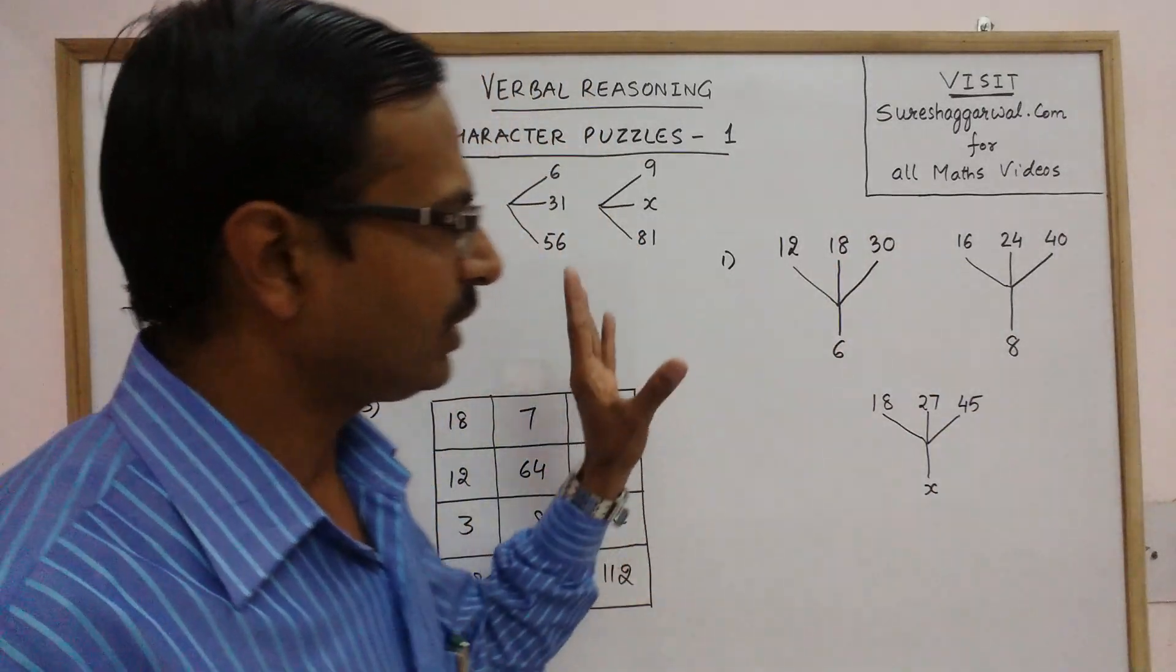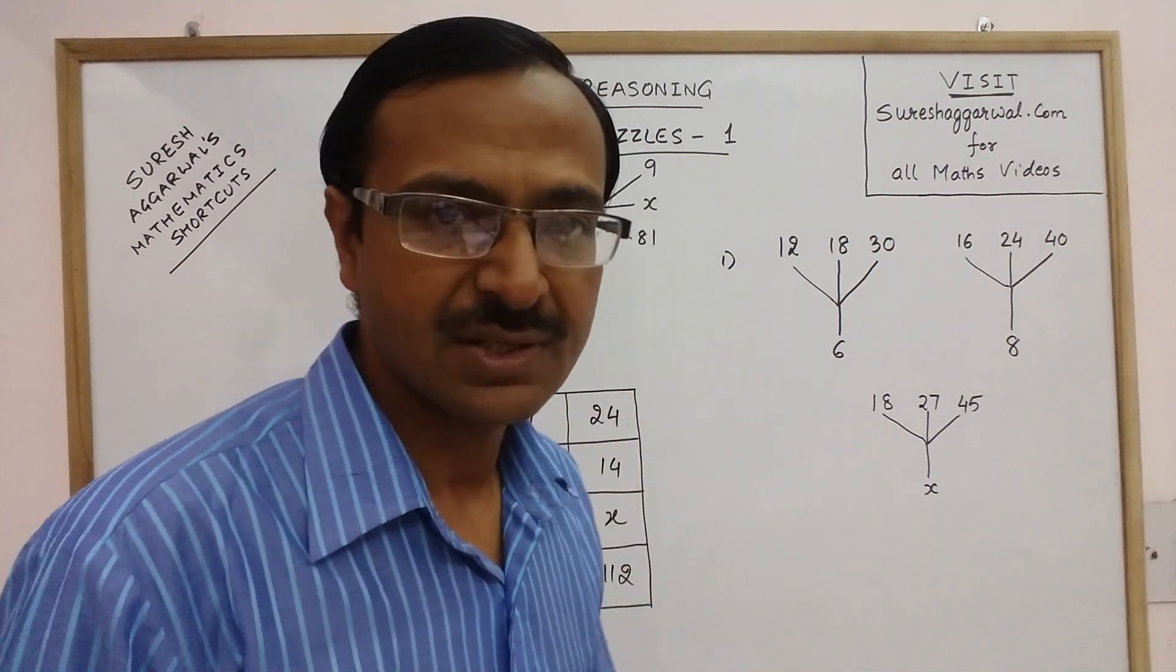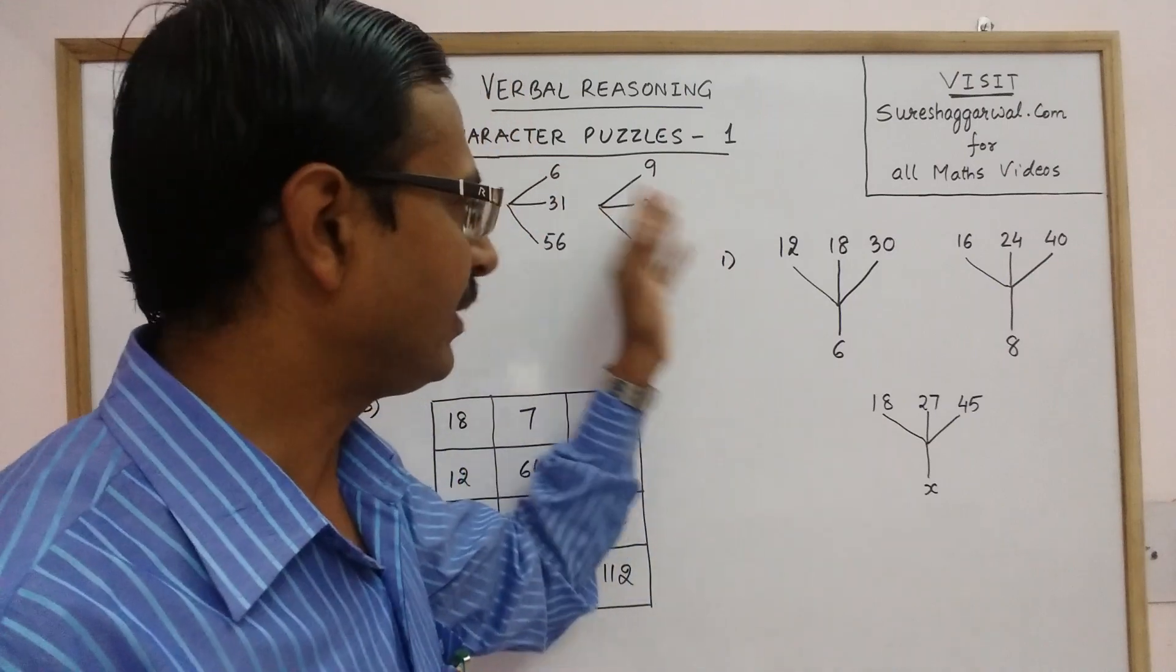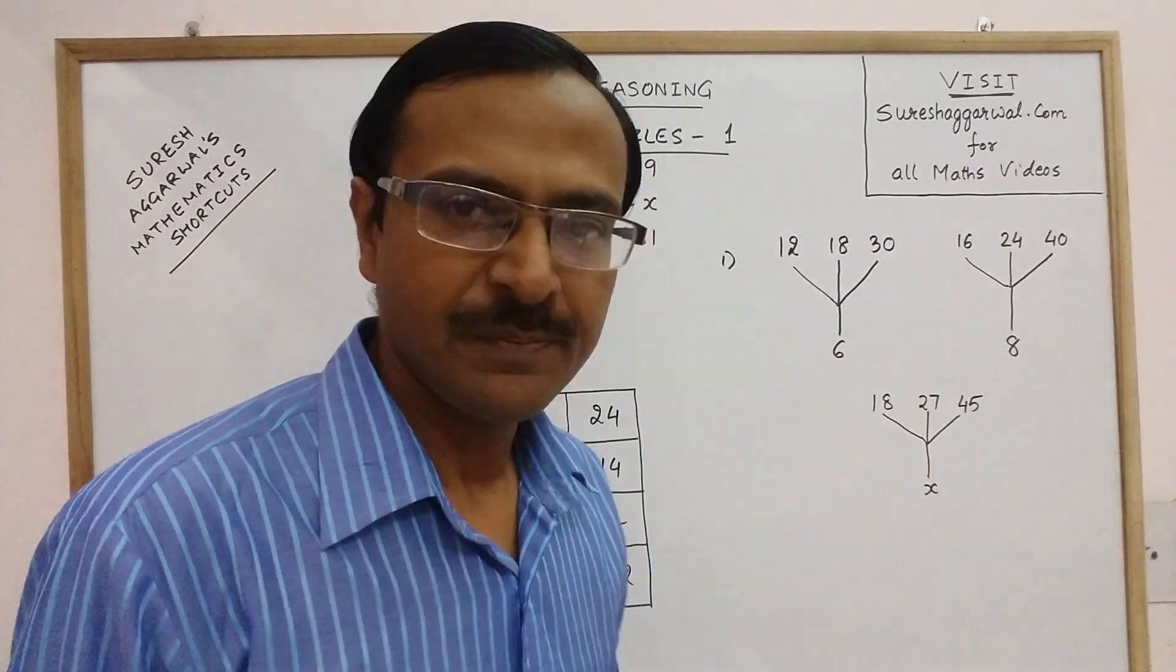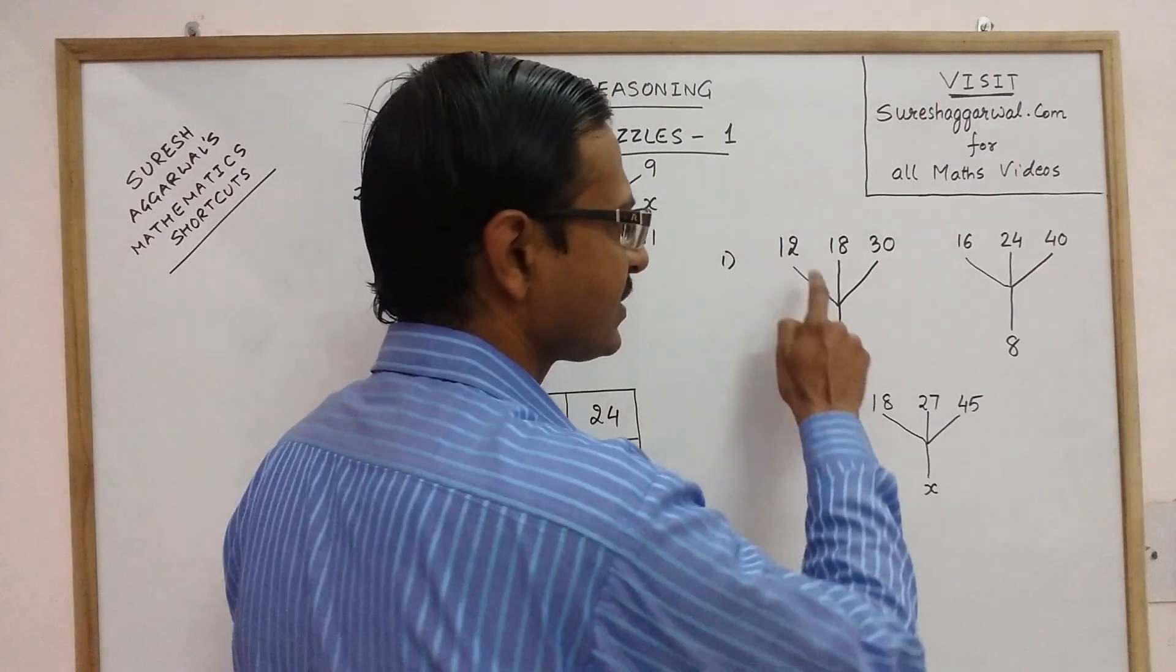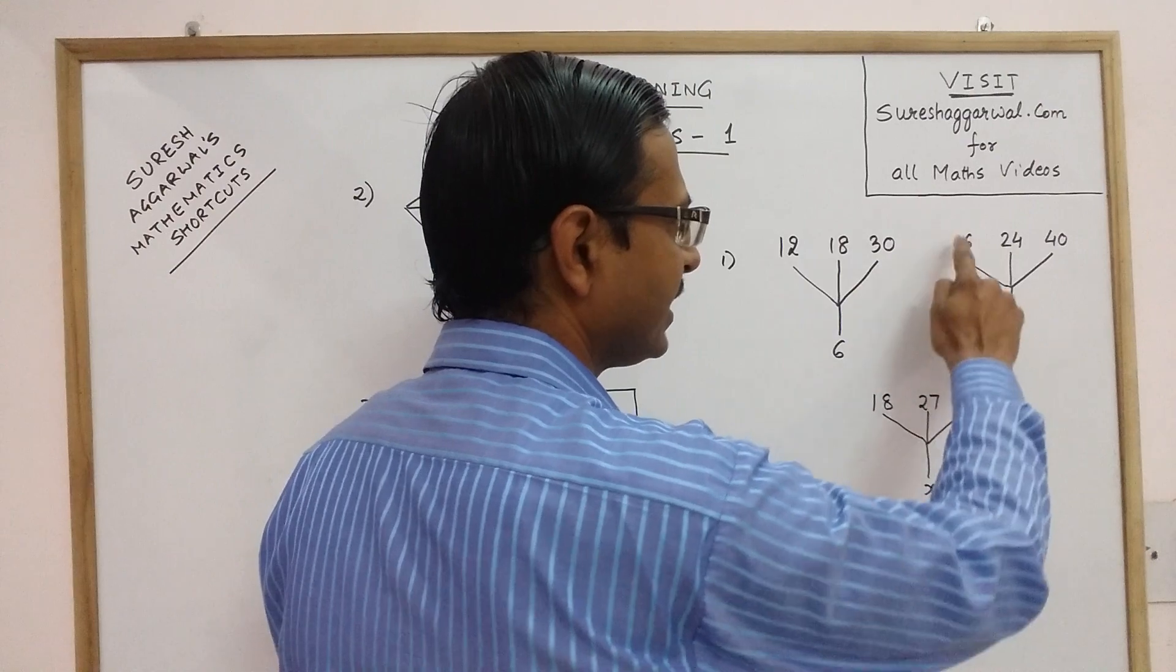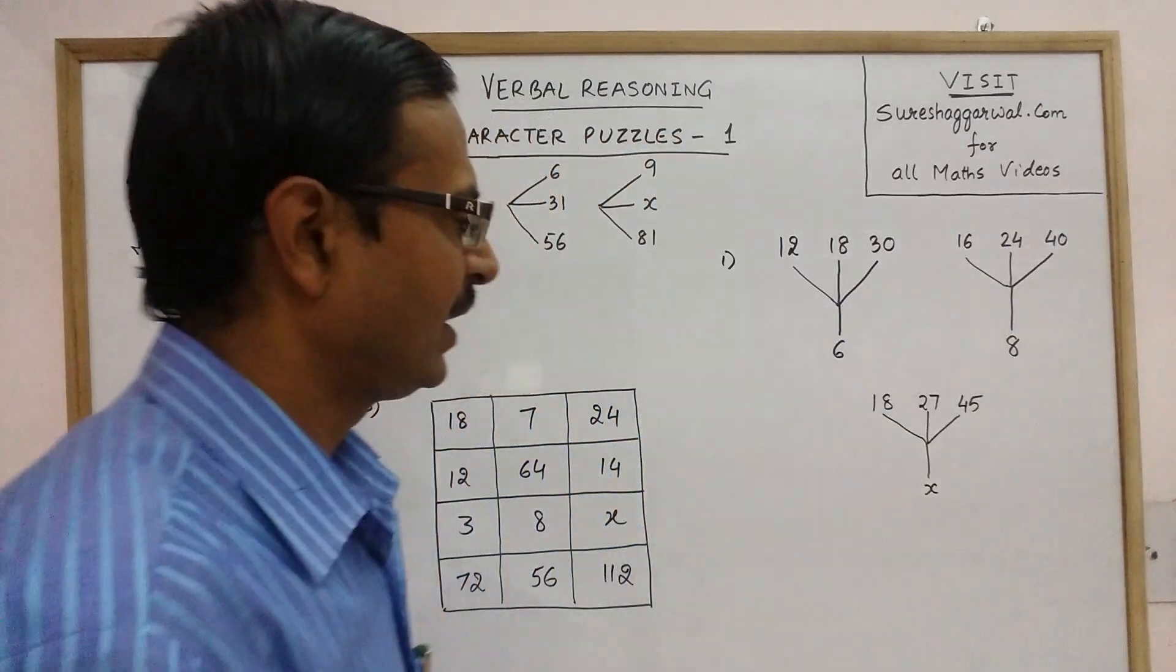Now for just explaining these type of questions, I just take up three questions and I will explain two of them. Now see, this is a very simple character puzzle in which the number 6 is smaller than these, 8 is again smaller than these. Now we need to find x.